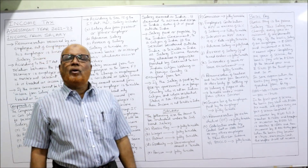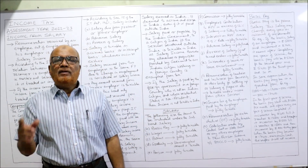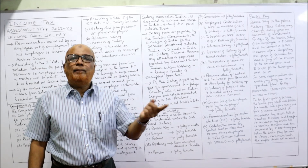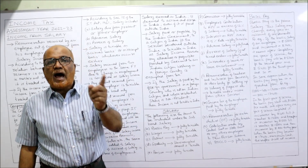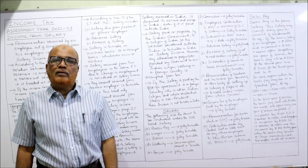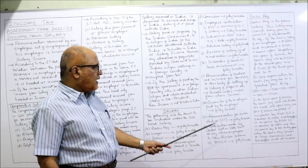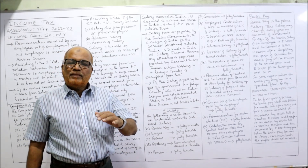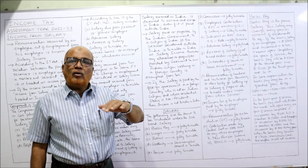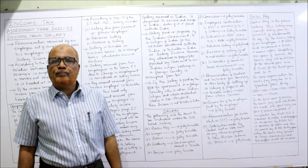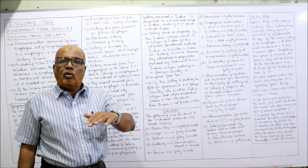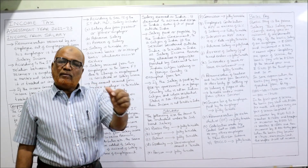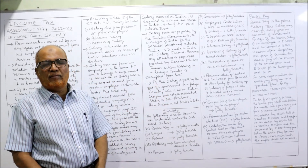Income tax of the employee paid by the employer: if the employer pays the income tax of the employee, that will be added to the income of the employee and is fully taxable. Remuneration for extra duties or overtime: sometimes the employee will work overtime or extra time, and overtime allowance will be given by the employer. That overtime allowance is also taxable under the head income from salary.